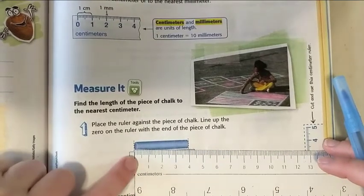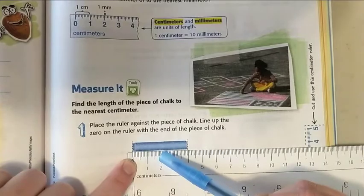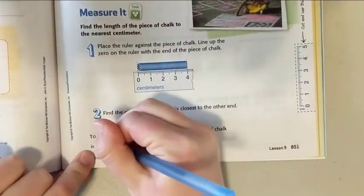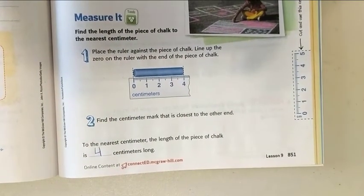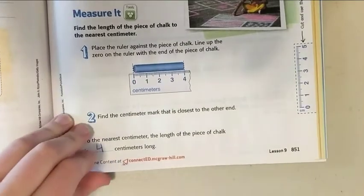It looks like it goes one centimeter, two centimeters, three centimeters, and four centimeters. So four centimeters is the closest to the end. Centimeters is abbreviated cm if you have to write it.